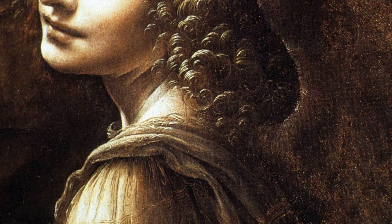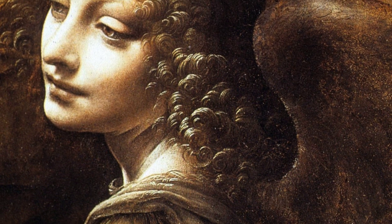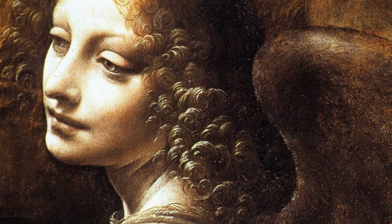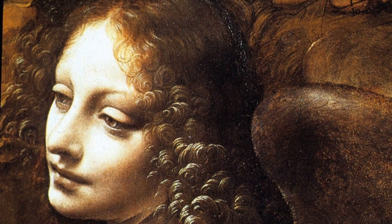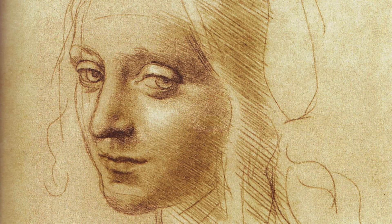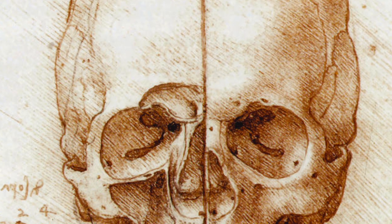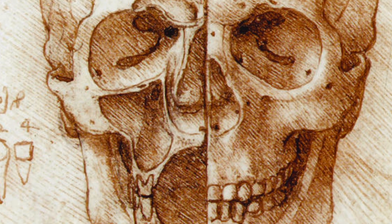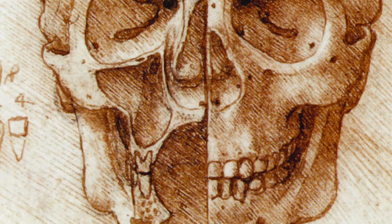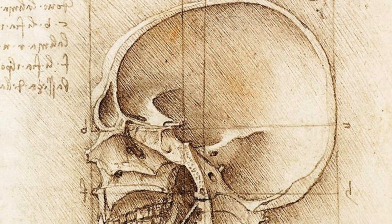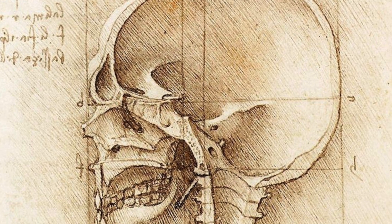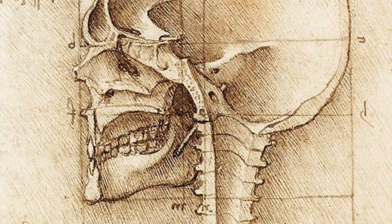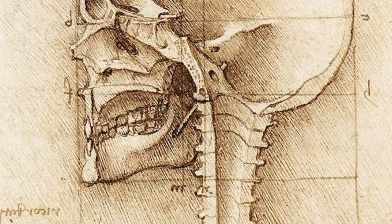In The Virgin of the Rocks, we can see he purposefully designed the painting based on the distribution of light and shadow. Figures emerge from the shadows like smoke. In Leonardo's drawings too, we see he designs using light and shadow. In this drawing of a skull, he uses a silverpoint technique of drawing lines in the direction of the light.